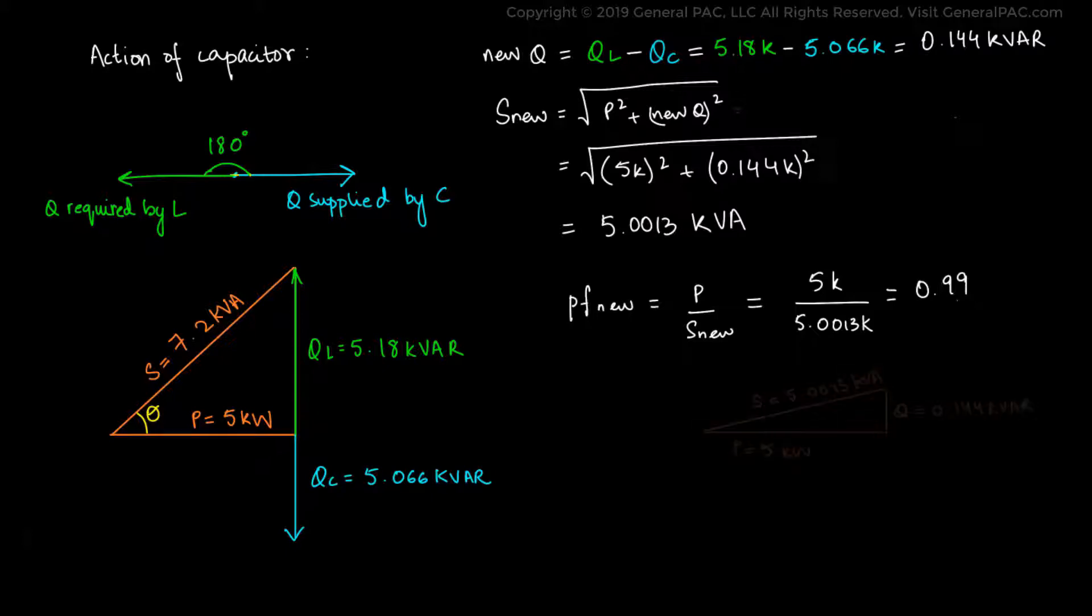We can redraw the power factor triangle to visualize the effect. And you can see that the true power and the apparent power are close to each other, but not quite 100%. And there's still some reactive power that's left over. The phase angle between the apparent and the true power now comes out to be 8.1 degrees, which is a massive reduction from the original phase angle of 46 degrees.